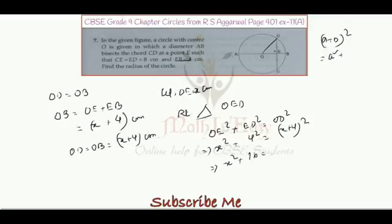Which equals to a square plus 2ab plus b square. So that means x square plus 8x plus 16. X square on both sides gets cancelled, so we are getting 8x equals to.